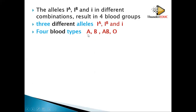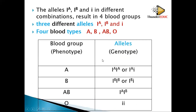Here is a table describing the blood groups and their genotypes. Blood group A can be homozygous A or heterozygous A. Blood group B can be homozygous B or heterozygous B. Blood group AB is codominant. Blood group O is homozygous recessive. The dominant alleles are A and B; O is recessive, making it homozygous recessive.